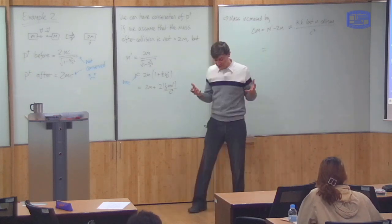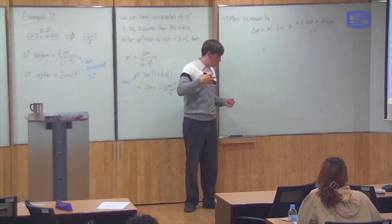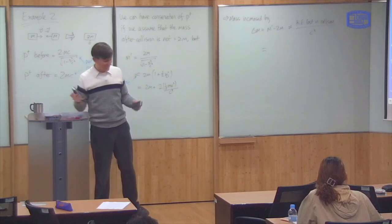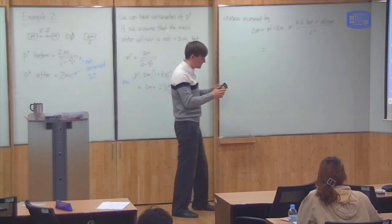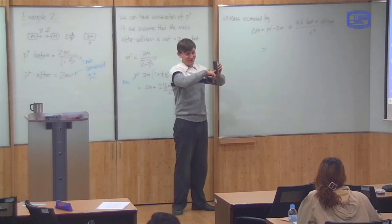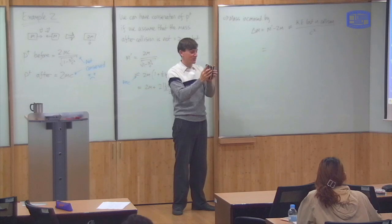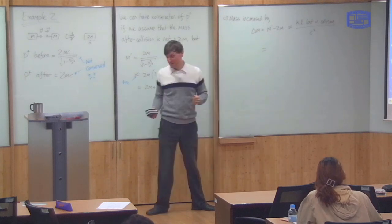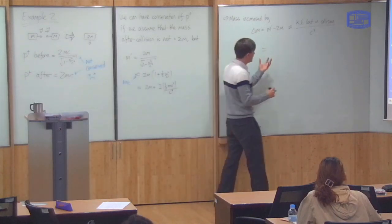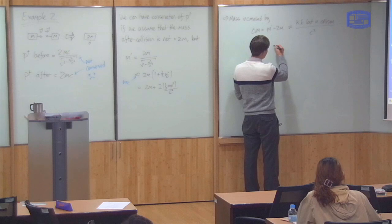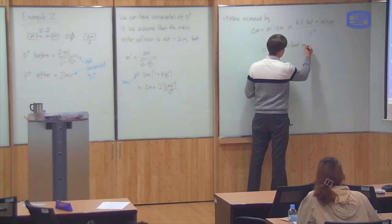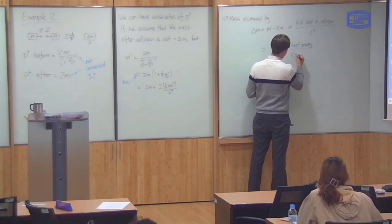We know that total energy is conserved, so if kinetic energy is lost then we must have created another kind of energy. You can guess what this is — if you keep doing this collision, these things will get hot. So what's happened is that the kinetic energy is being converted into heat energy. And what the equation says is that the gain in the mass is equal to the gain in heat energy divided by c squared.